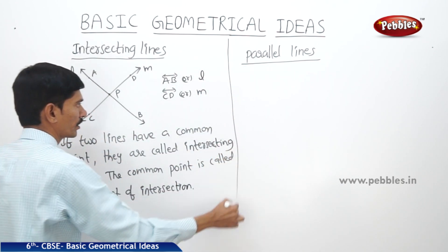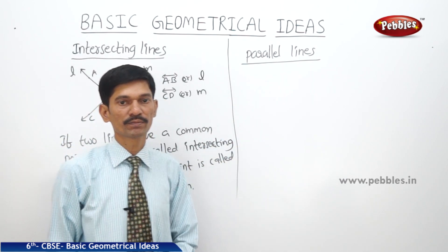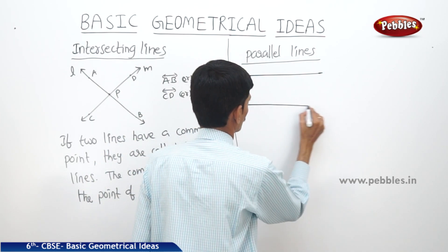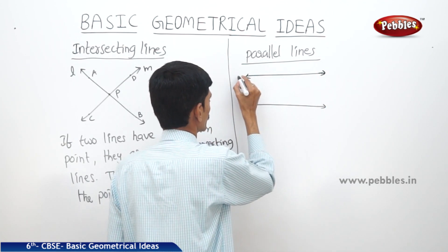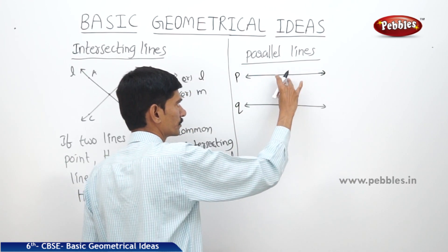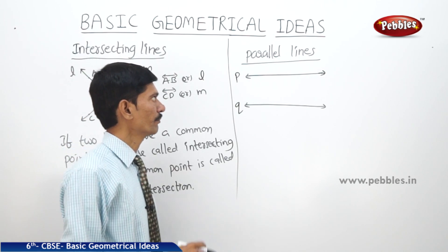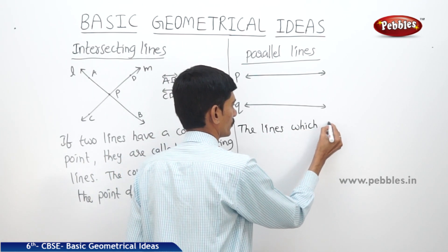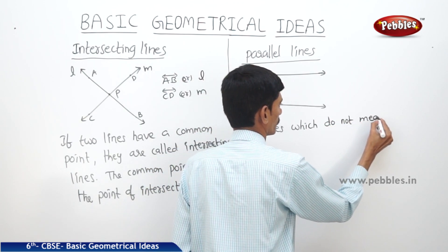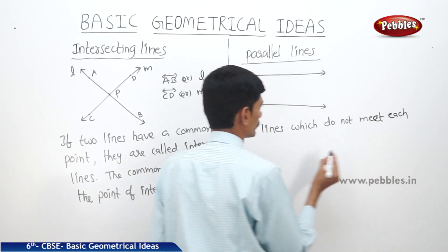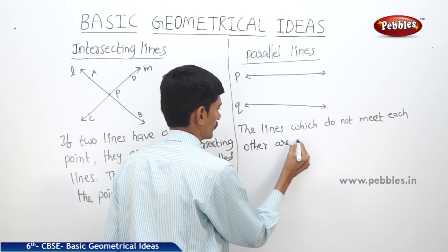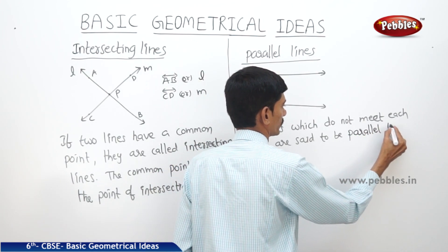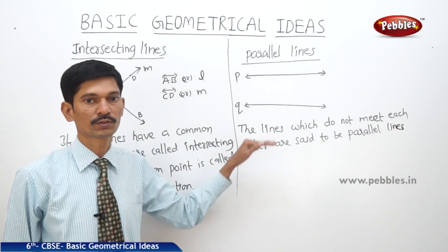Now for parallel lines: if two lines do not meet each other, they are said to be parallel lines. For example, lines P and Q are two lines which do not meet each other, so these two lines are said to be parallel lines. Lines which do not meet each other are called parallel lines.